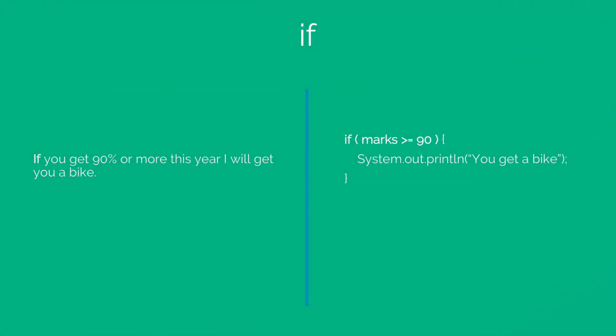Often there are situations when you want to run a particular piece of code only if some condition is true. For example, look at this statement in plain English that says: if you get 90% or more this year, I will get you a bike.